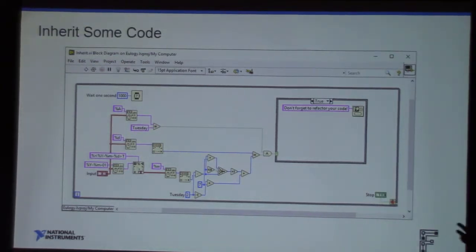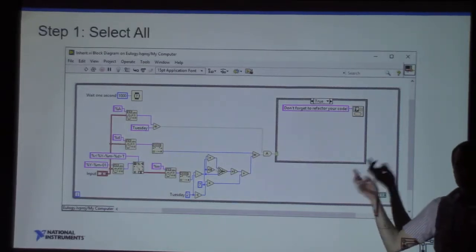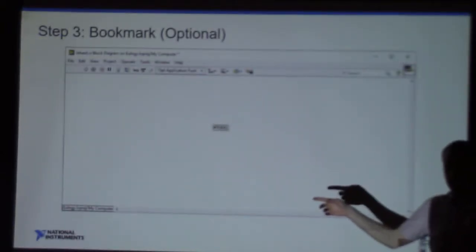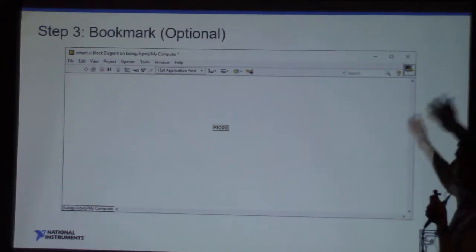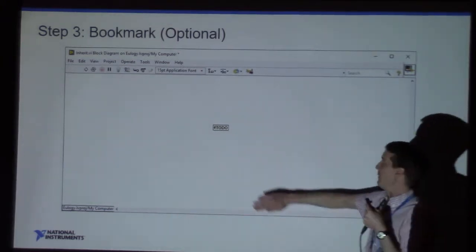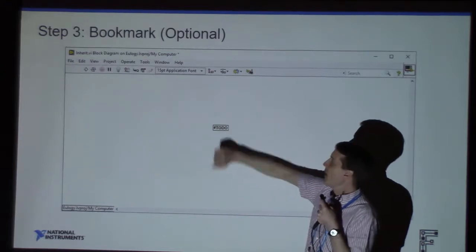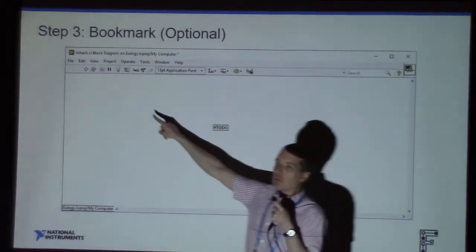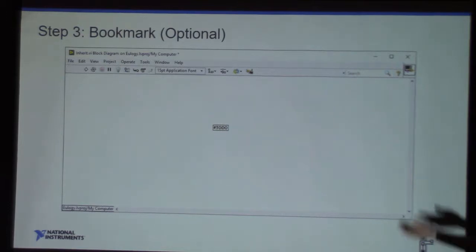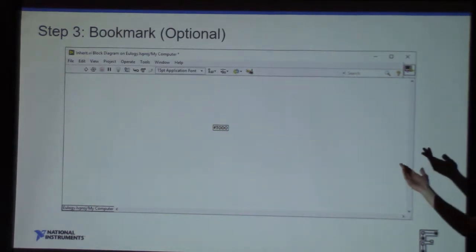Here are the three steps for refactoring this code. Step one: select all. Step two: delete. Step three, which is optional: put a to-do on there. Because look what we have — a beautiful, clean block diagram. It still runs, right? So we've refactored our code.